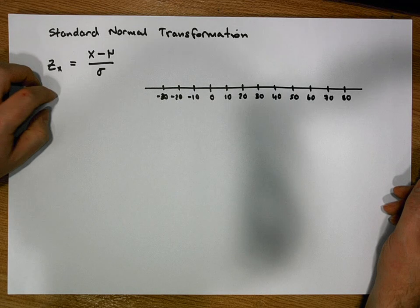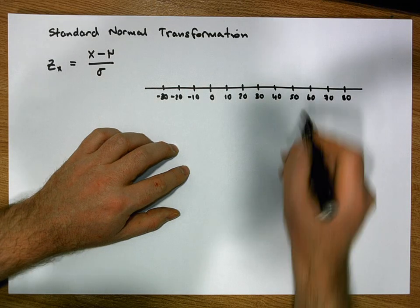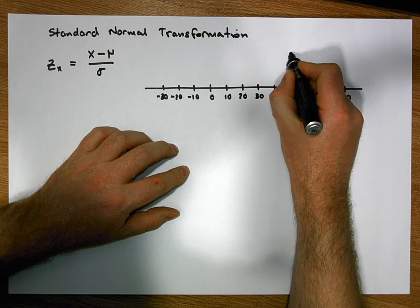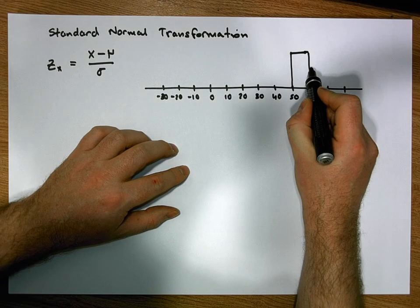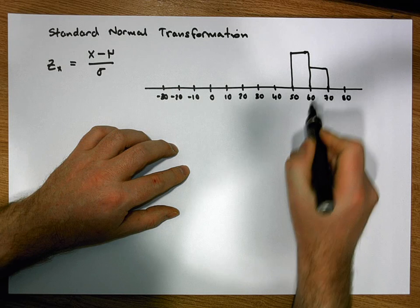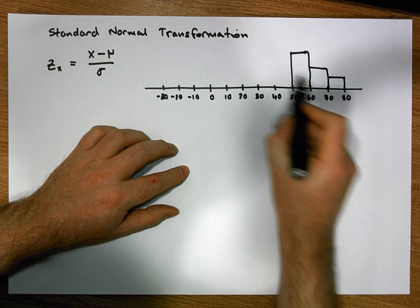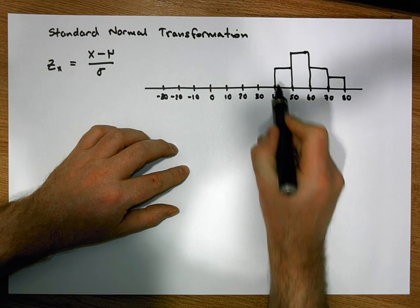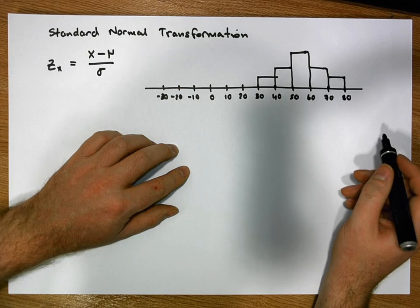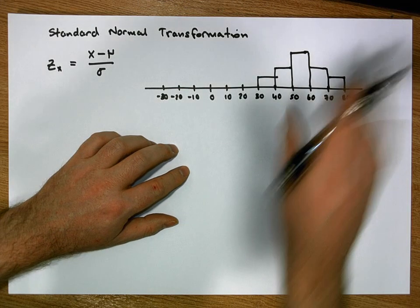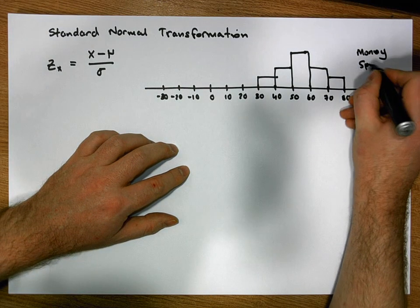We asked a number of students how much they typically spend over the weekend, and we represent our responses through a histogram. The vast majority of students said they spent between 50 and 60 euros, with fewer saying 60 to 70, fewer again between 70 and 80, and some between 40 and 50 and between 30 and 40 euros.